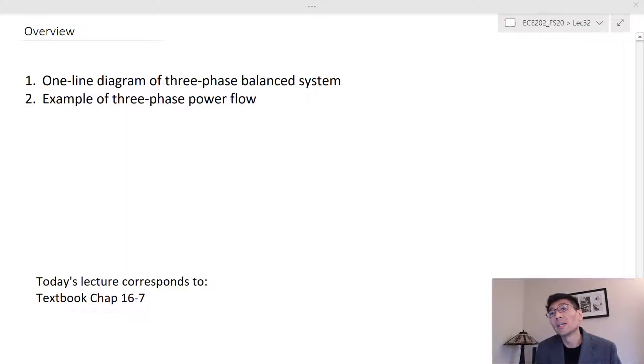The first is the one-line diagram of the three-phase balanced system, because in the real-world power system there are many nodes called buses. There are many buses, and it's very complicated if you draw all three lines.